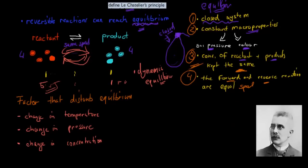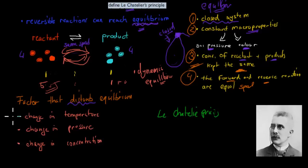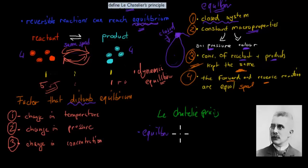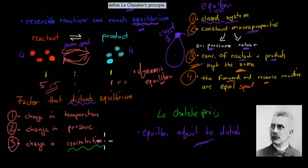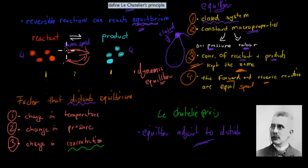This is where Le Chatelier's principle comes into play. What it says is that a system will be kept at equilibrium even if there's a disturbance. A disturbance means something changes — for example, if we change the temperature, the pressure, or the concentration. The equilibrium will adjust to the disturbance to make sure that overall nothing much changes. Let's look at just the change in concentration for this video — we'll cover the other factors in the next videos. So let's say we want to keep a one-to-one ratio as our original equilibrium.